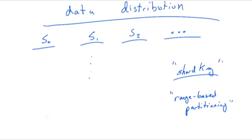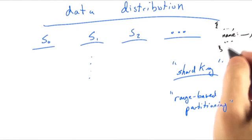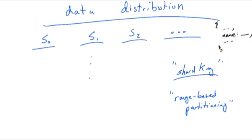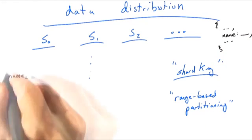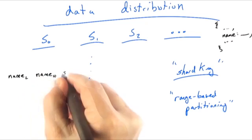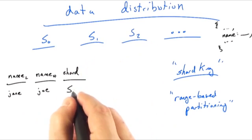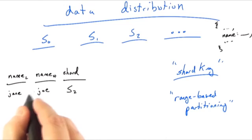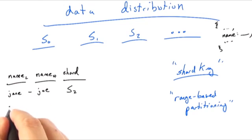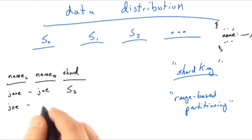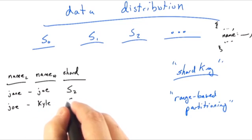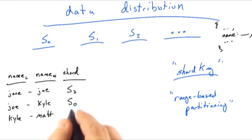So for example, let's say we had documents and they have various fields, but name is our shard key. And we shard on that. So you declare your shard key, then what we would have is name low, name high, shard. So for example, Jane to Joe belongs on, let's say, shard two. And then that's a range. And then Joe to Kyle is on shard zero, Kyle to Matt, shard one, and so forth.